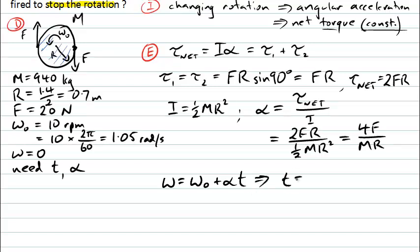That will be the change in angular velocity divided by the angular acceleration. Importantly here, our change in angular velocity will in fact be negative because our final angular velocity is zero.